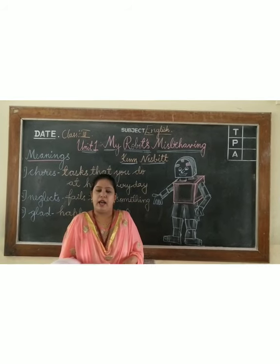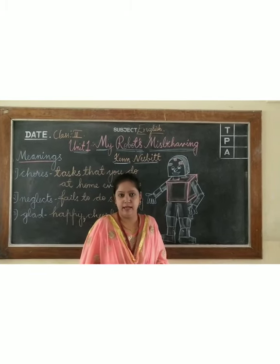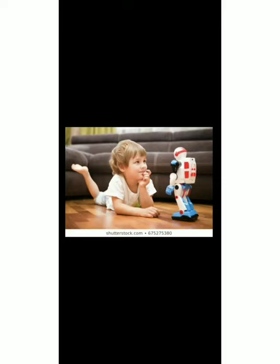I think you all have read this poem. Now let us understand the poem line by line. In this poem, the poet is a child. He is describing that his Robot is misbehaving — not obeying him. Whenever the child tells it to do any work, the Robot won't do it. Let's see how this Robot is misbehaving in the poem.